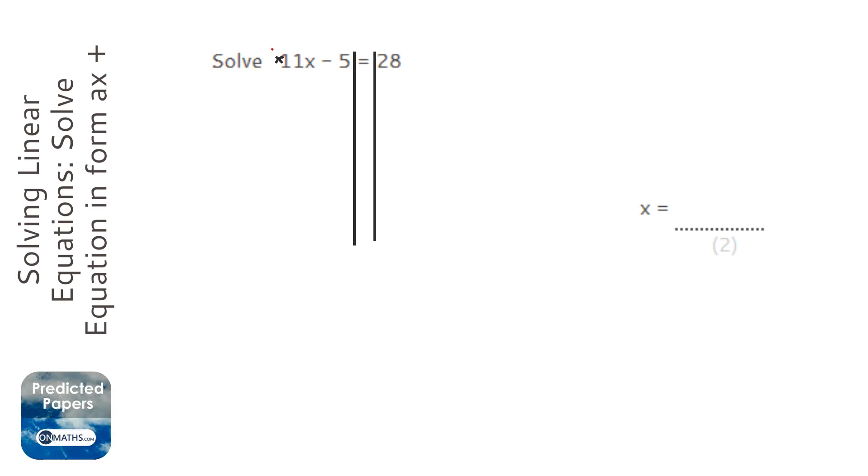So we need to get rid of those two things: the times 11 and the take away 5. It really matters which order we do this. If you've got an add or subtract, you've got to get rid of that first.